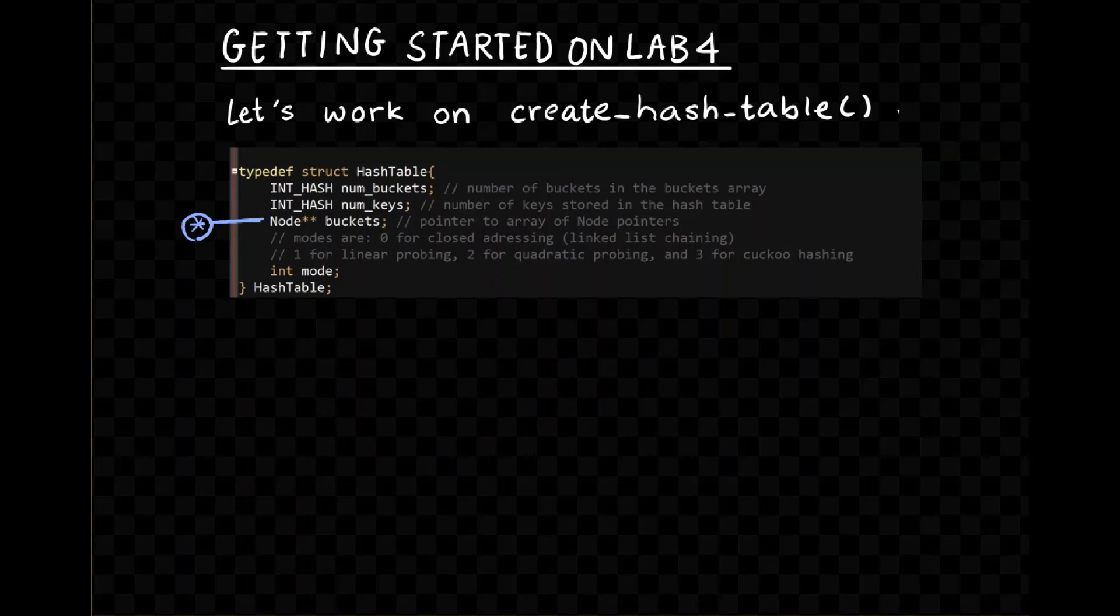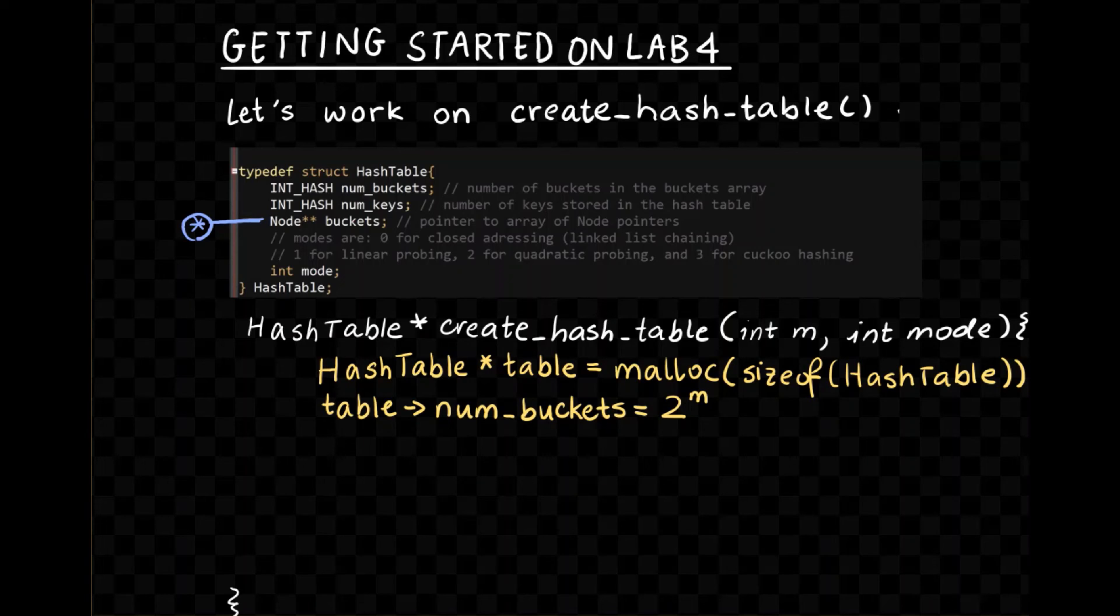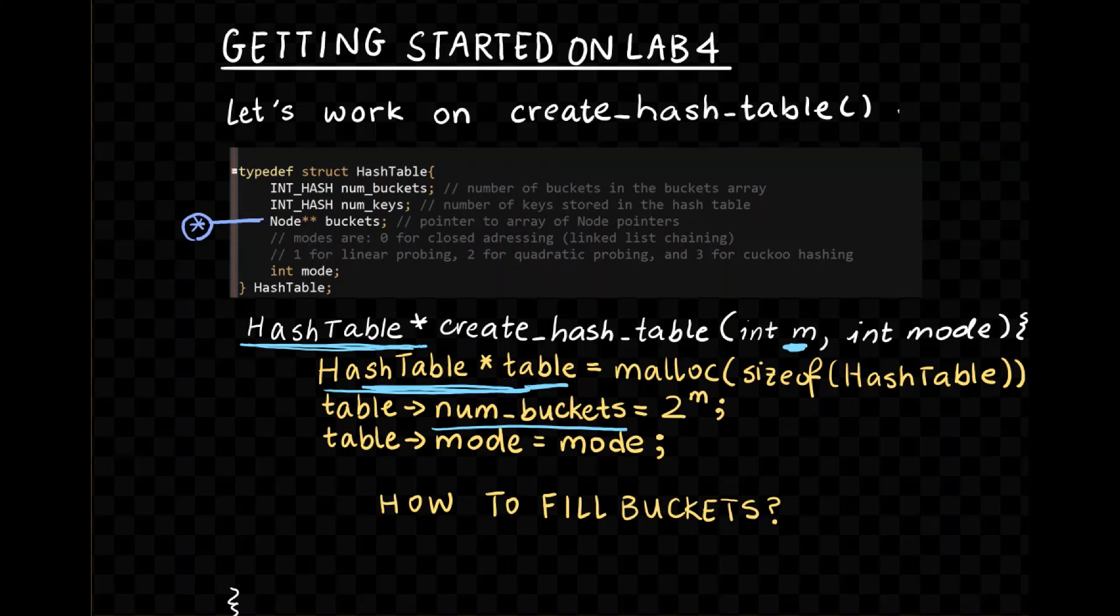Okay, so after thinking about those questions, I sketched out the function, and I decided to first create the table pointer, the hash table pointer that I need to return. You see here that the return is of type hash table pointer. So I create that hash table pointer, I call it table, and I allocate some memory for it. And then I know that the number of buckets is going to be 2 to the power of m, which I pass in. Now, mode is trivial, I just set up the mode to be mode, but we haven't addressed yet how to fill the buckets.